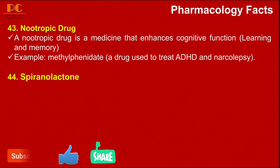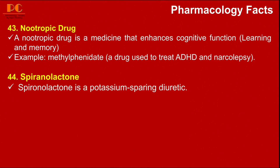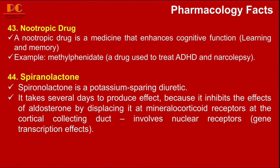Now let's talk about spironolactone. Spironolactone is a potassium-sparing diuretic and it takes several days to produce its effect because it inhibits the effect of aldosterone by displacing it at mineralocorticoid receptors at the cortical collecting duct. It involves nuclear receptors, meaning it affects gene transcription, which is why its onset is delayed.